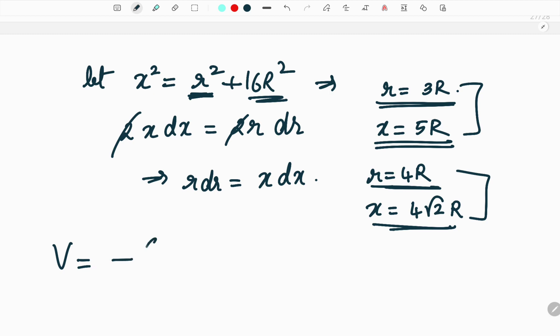Therefore the potential equation will be minus 2GM by 7 capital R square into integral of the lower limit we got it as 5r and the upper limit is 4 root 2 into r and in the numerator we have r dr which can be replaced by x into dx and in the denominator we have x.